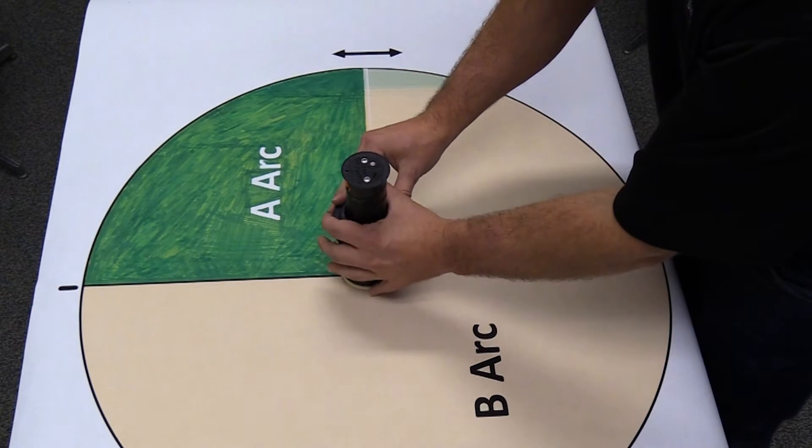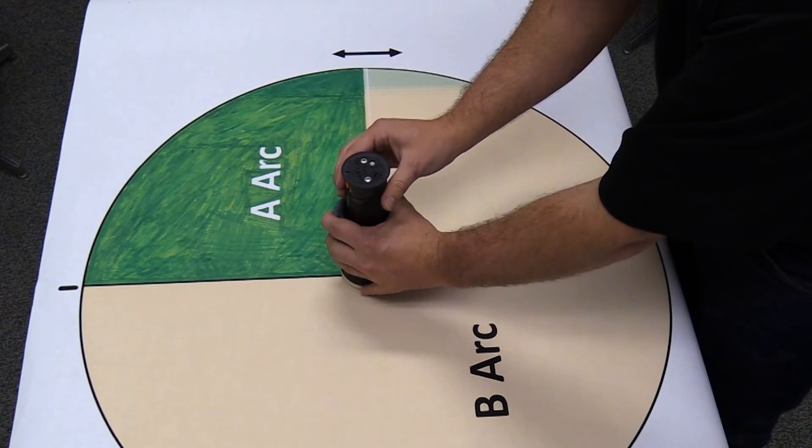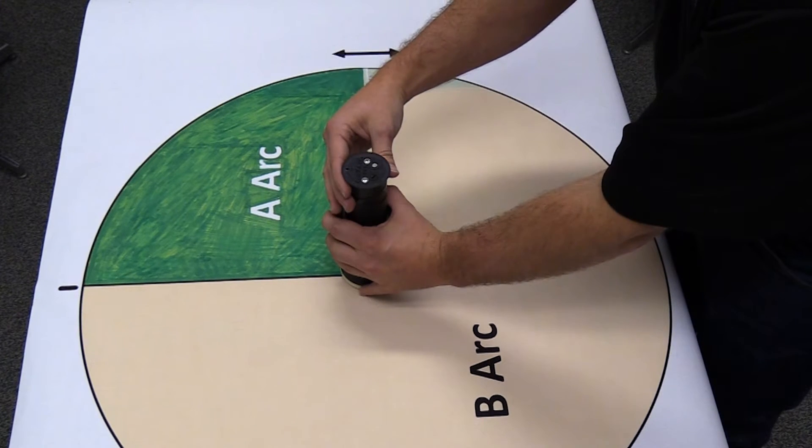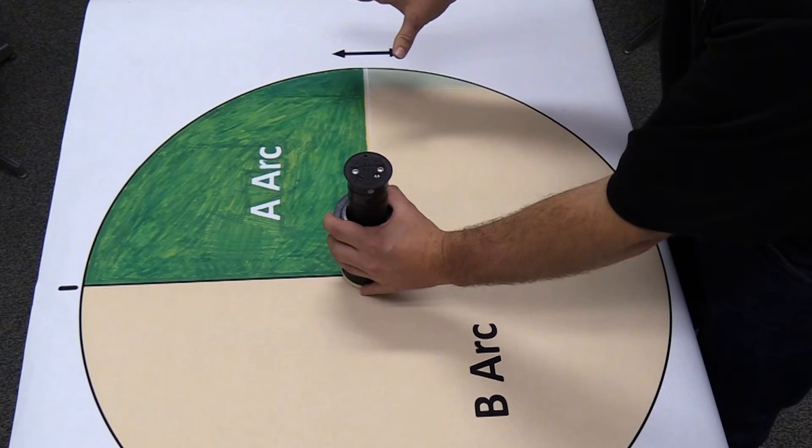Let's start with the Rain Bird 751 internal set to the leading edge of the A arc, which is this outside edge. To demonstrate that it's in the A arc, we'll rotate to the other stop, which is this edge of the A arc.